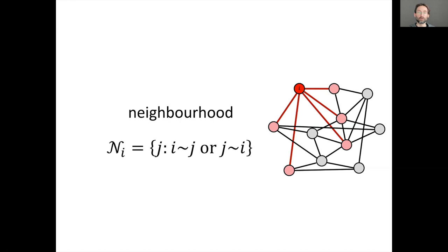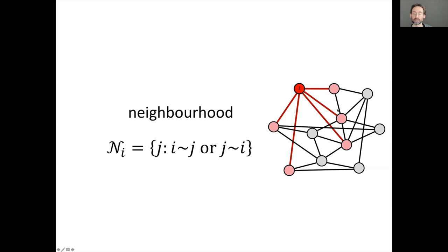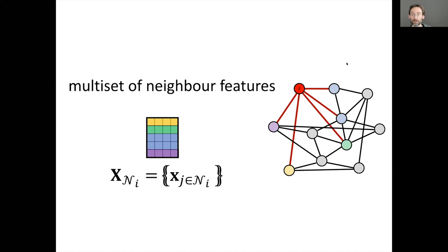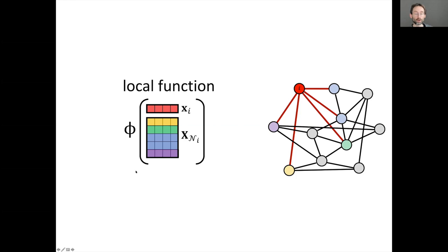Local functions look at neighbors: aggregate features from nodes connected to node i. An important subtlety is that even though neighbor indices are unique, features may not be — two nodes can have identical features. This is a generalized notion of a set where elements can repeat, called a multi-set or bag. The local function phi acts on the current node feature and the multi-set of neighbor features, and must work in a permutation-invariant way.